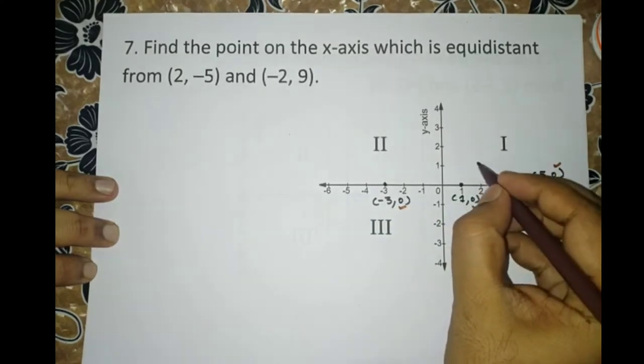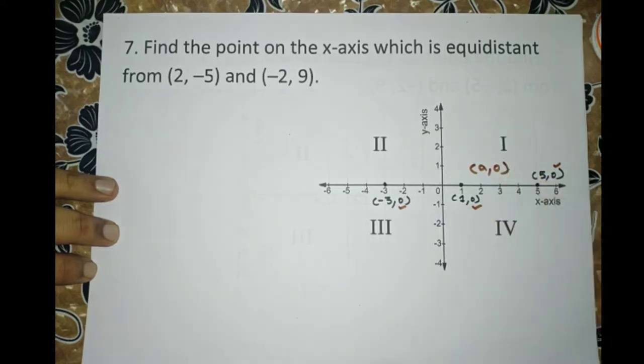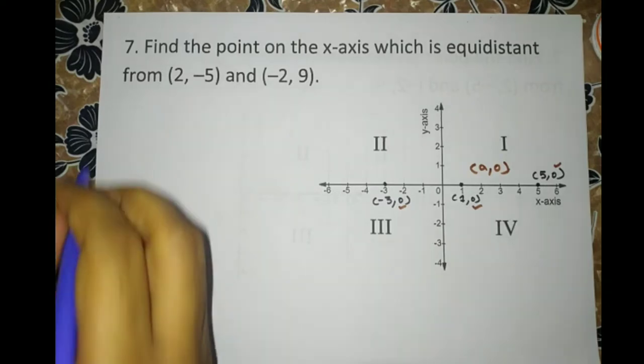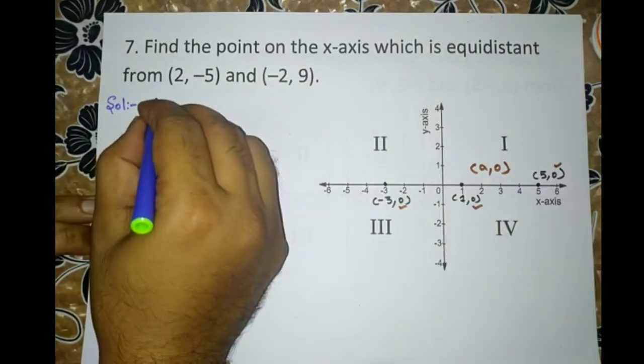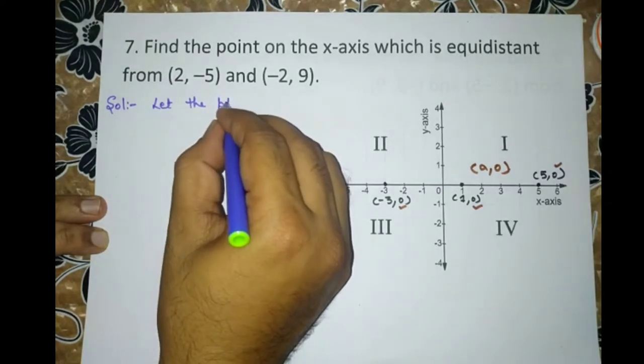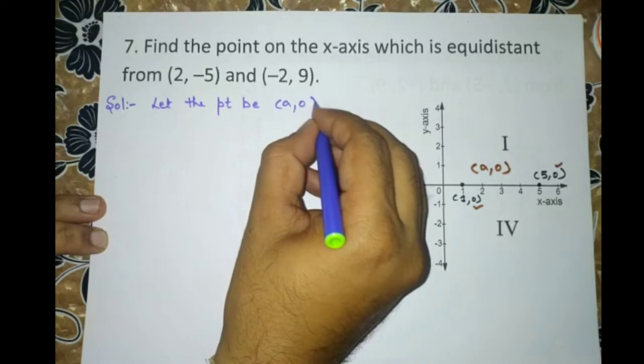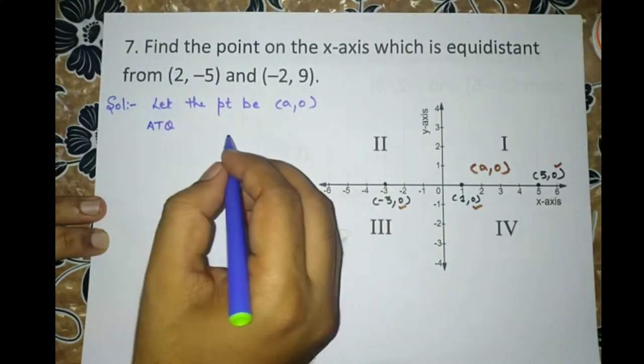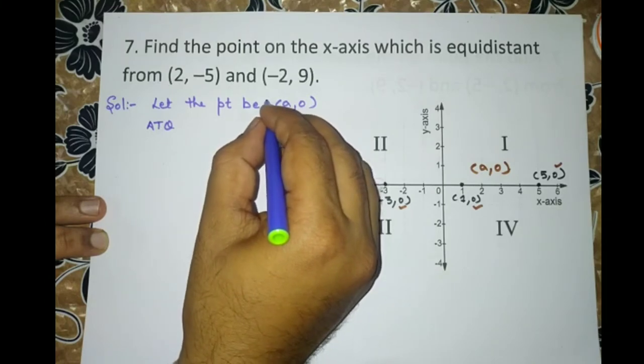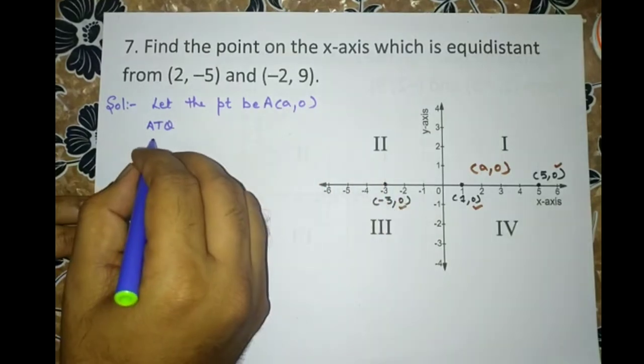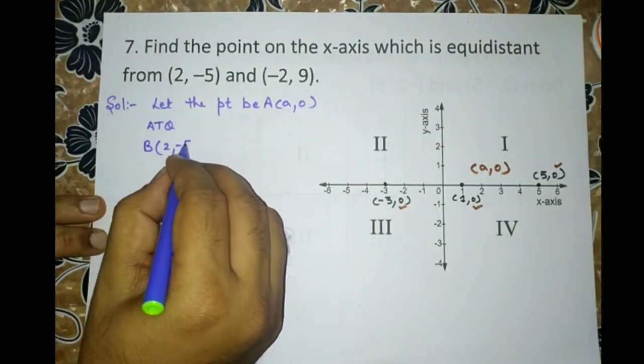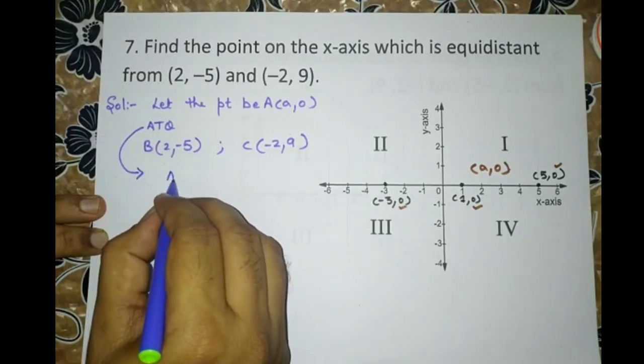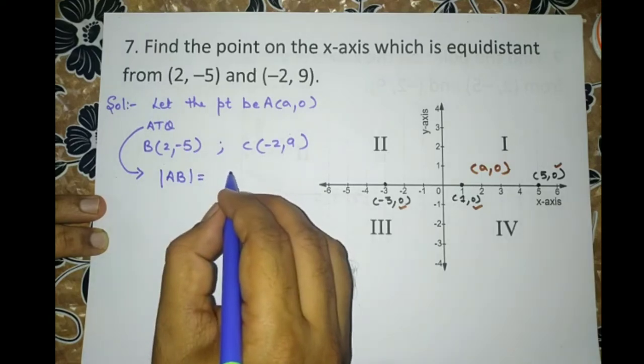So in general, I can say that any point on the x-axis is of the form A, 0. And this point we will assume as our general point or the required point. Equidistant means at equal distance. So let the point be A, 0. Now according to question, let us give some name to this point. Say A. And the two given points as B (2, minus 5) and C (minus 2, 9). Now according to question, the distance between AB is equal to the distance between AC.